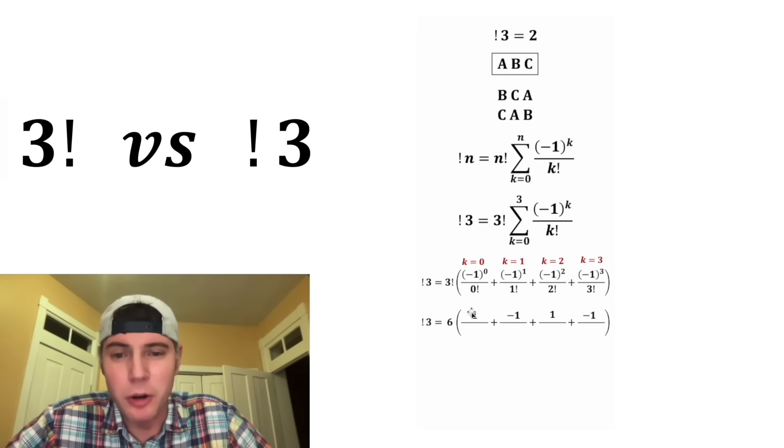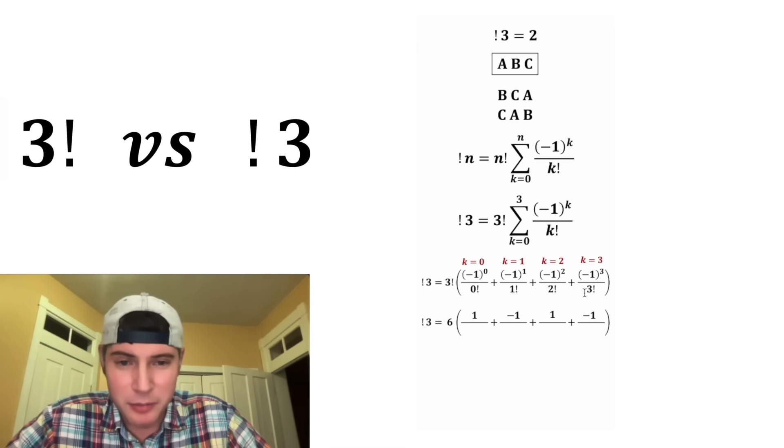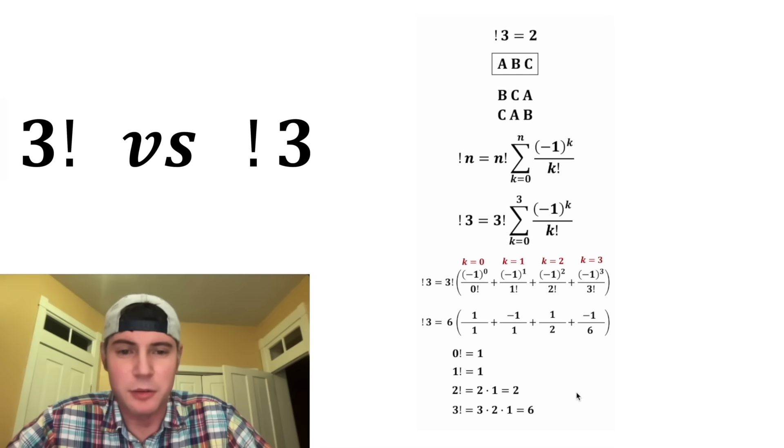Basically, this negative 1 to the k will always shift back and forth, positive, negative, positive, negative. And then for the bottom, we have factorials. Let's bring our factorials back. 0 factorial was equal to 1, 1 factorial was equal to 1, 2 factorial was equal to 2, and 3 factorial was equal to 6.